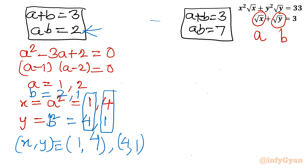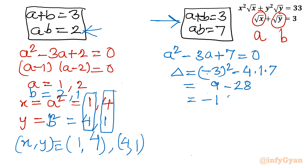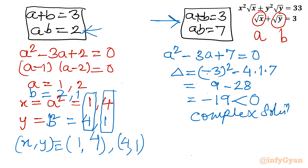System 2: a+b = 3, ab = 7. The discriminant is b² − 4ac = 9 − 28 = −19, which is negative, so this generates complex solutions and we reject it. The ultimate final solution, consistent with Method 1, is (x, y) = (1, 4) and (4, 1).